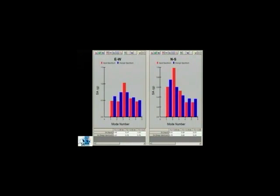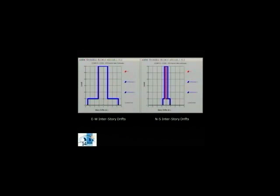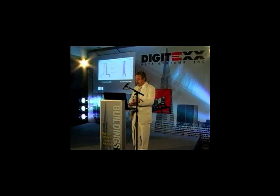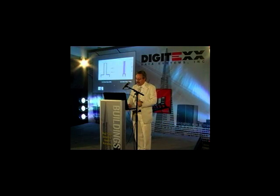But if you take a look at the recorded motion — the recorded acceleration — and deduce the story drifts from it, you see a completely different picture. In the east-west direction, the floor moved more than three inches, about 10 centimeters, while in the north-south direction it moved about one-fourth or one-fifth of that. So from recorded motion that you can get through instrumentation, you can clearly see that if something happened to this building, it happened in the first floor in the east-west direction. And that's exactly what happened — all those columns that failed were in the east-west direction. That is information you cannot get from design calculations.